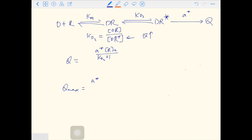So Qmax equals alpha star Rt over Kd2 plus 1, times D over D plus Kd1 times Kd2 over Kd2 plus 1. So EC50 is Kd1 times Kd2 over Kd2 plus 1.